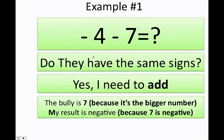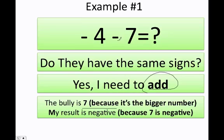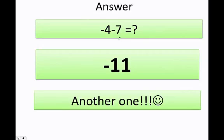All right, let's do it. Negative 4 minus 7. First of all, ask yourself: do they have the same sign? The answer is yes, so I need to go ahead and add. The bully is 7 because it's the bigger number. Therefore my result is going to be negative, because I'm keeping the bully's sign. So how much is negative 4 minus 7? I hope you told me negative 11.